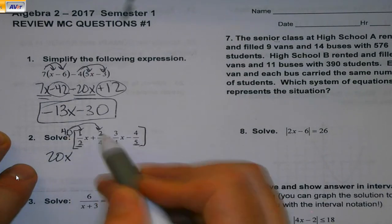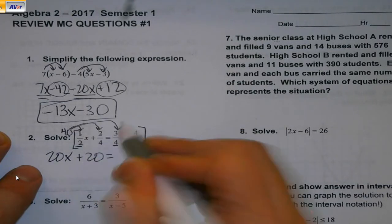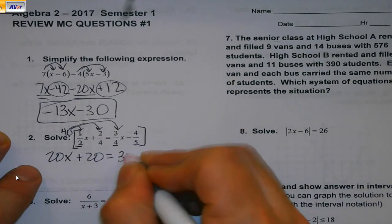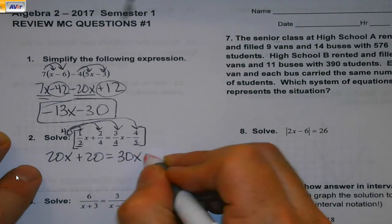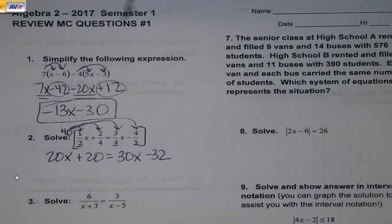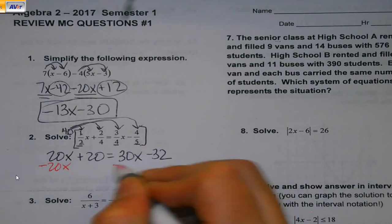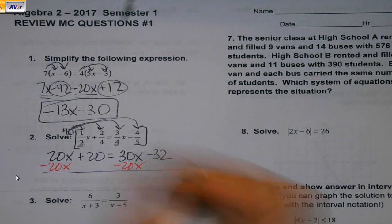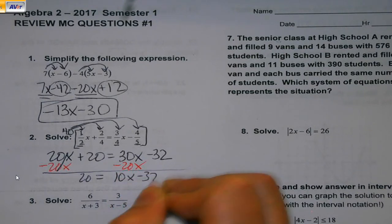Forty times one-half, maybe I know that's twenty. But if I didn't, what I'm doing is I'm going to be taking this number, times it times the number on top, so forty times one is forty, and then divide by this number. So forty divided by two is where that's coming from. And I'm going to distribute that all the way through. Forty times two is eighty, divided by four is twenty. Forty times three is one hundred and twenty, divided by four is thirty.